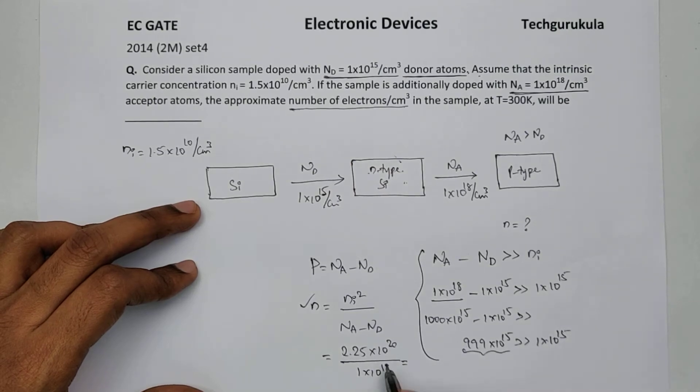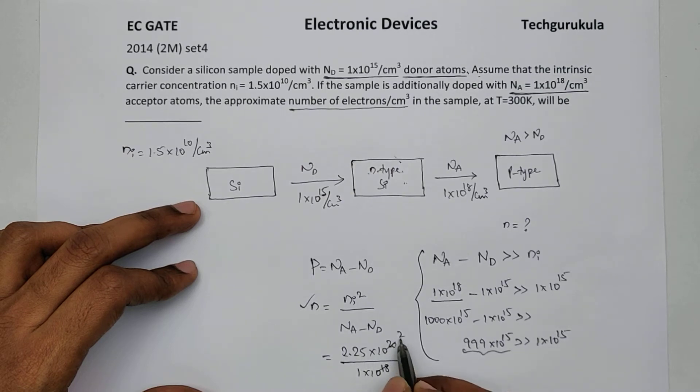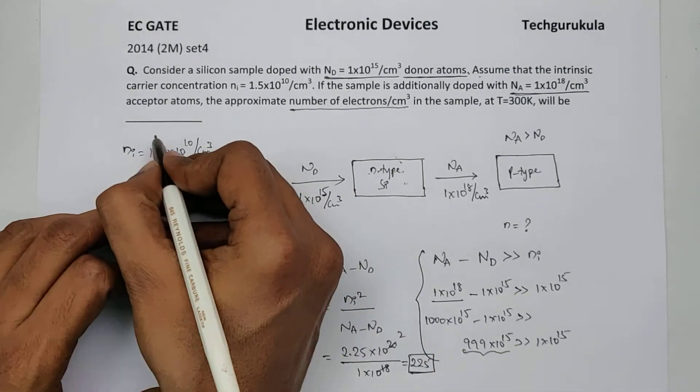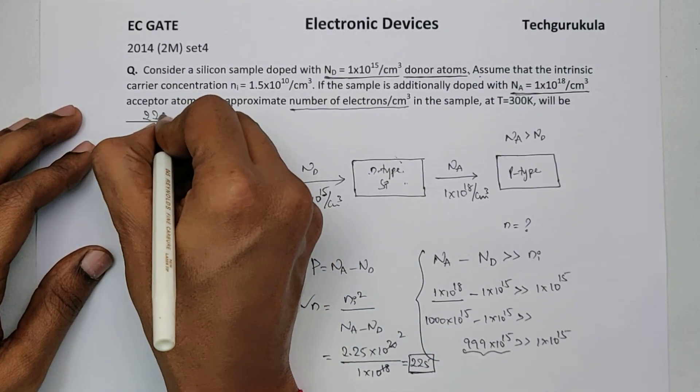Now which is equal to, 18 becomes 2, so it becomes 2.25 times 10 power 2, which is nothing but 225. So the answer is 225.